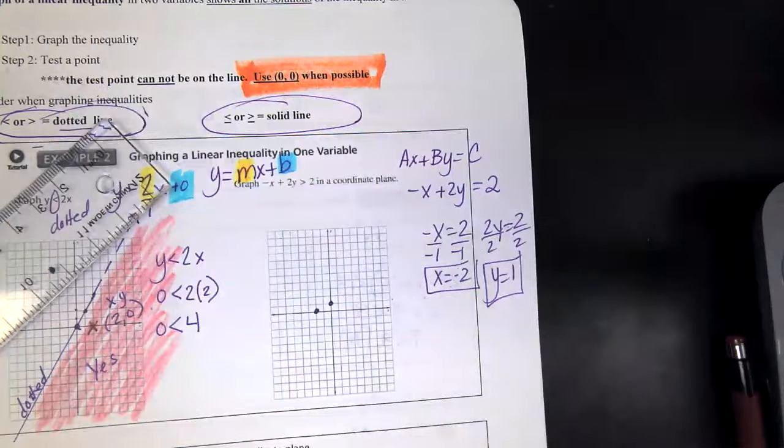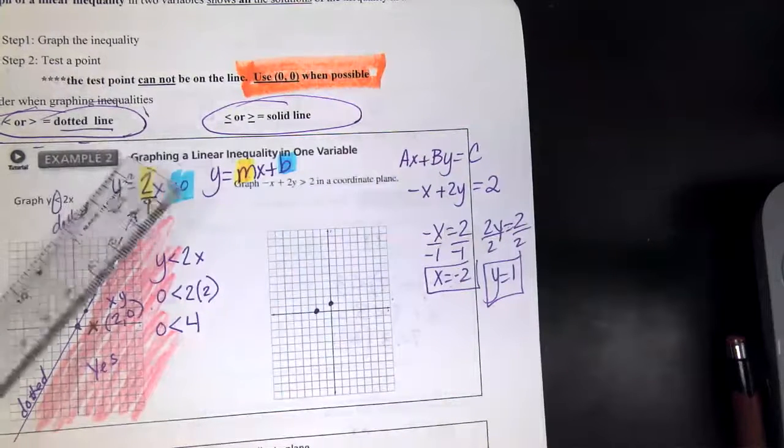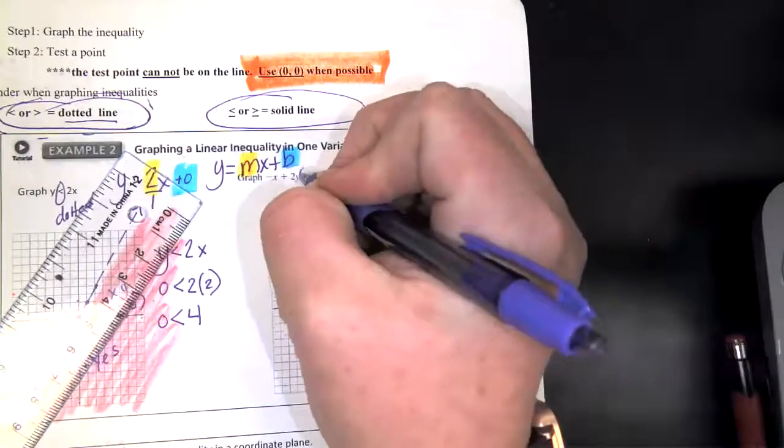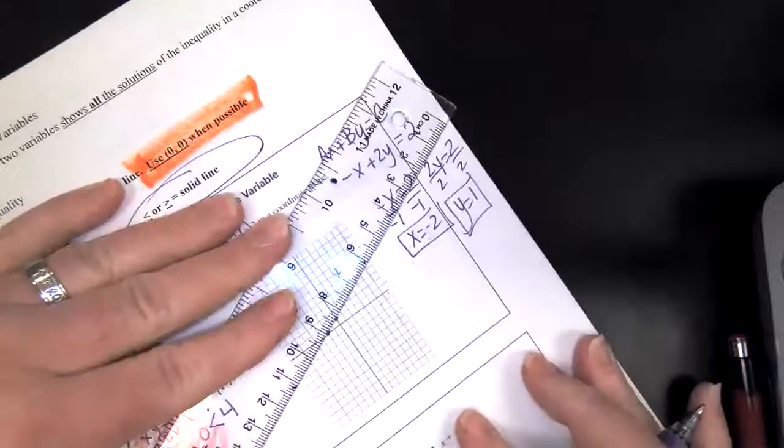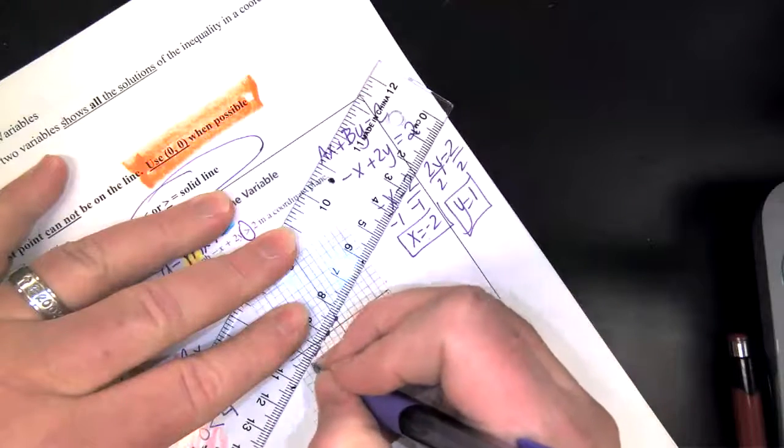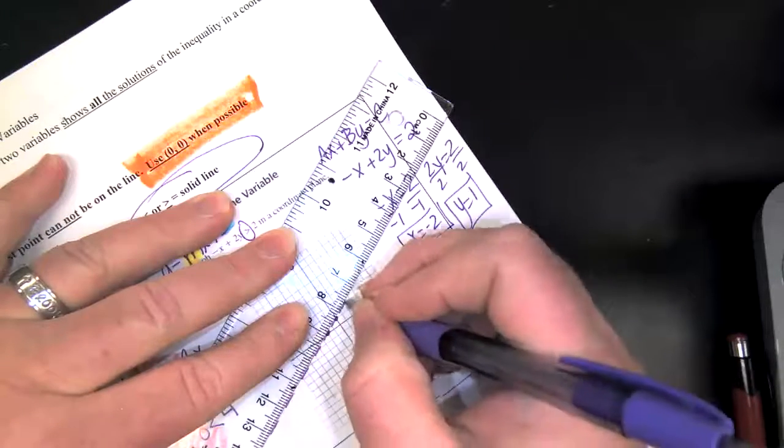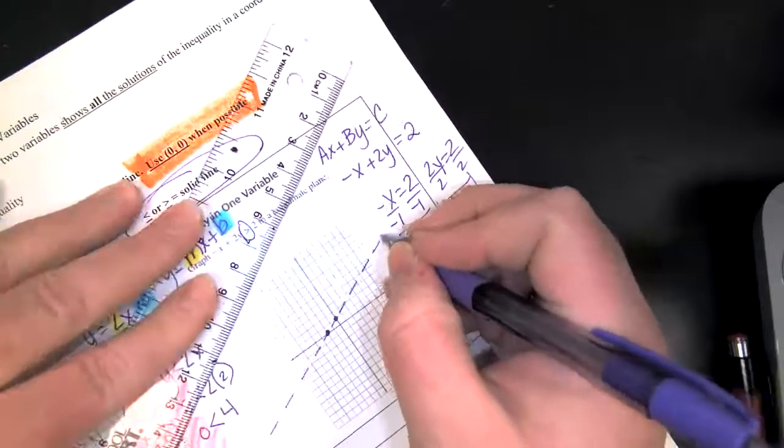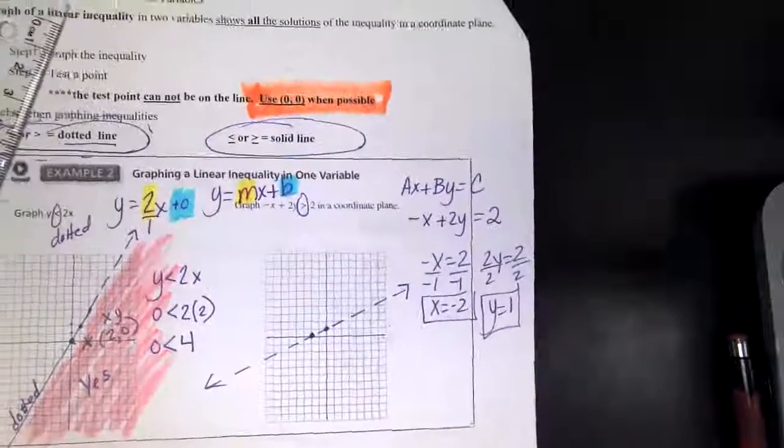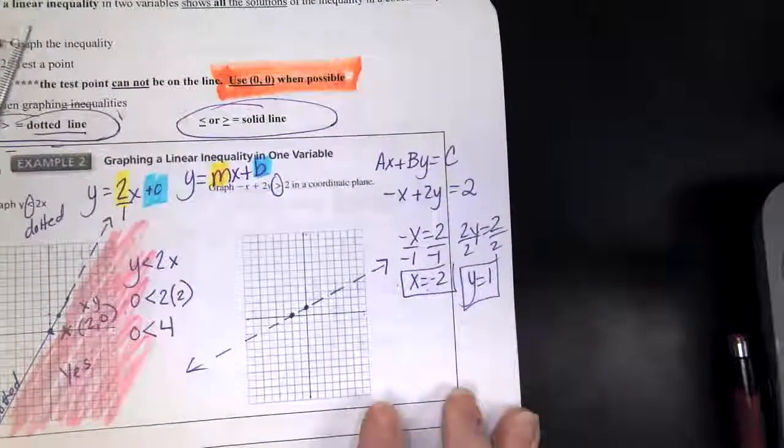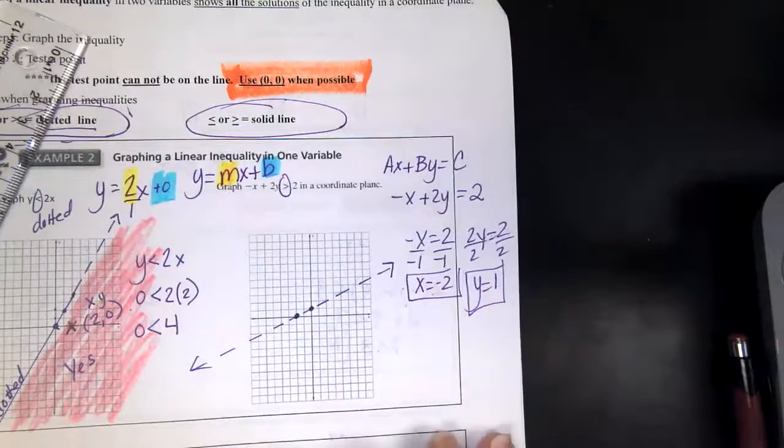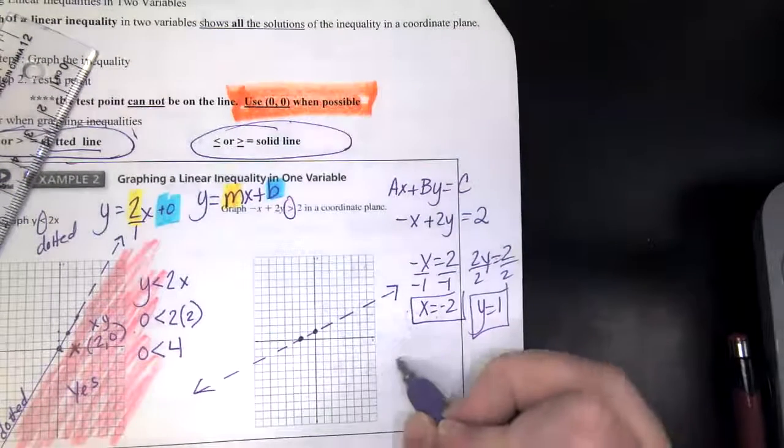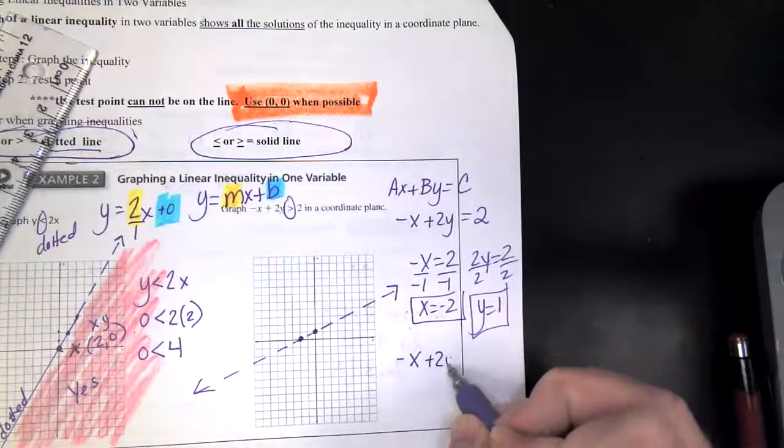If your answer is yes, then you have to shade the side that's yes. Okay. So this means you can pick any point in this area and it will make that statement true. Okay. So there's a lot of things going on. Not only do you have to graph it right, but you also need to make sure you get dotted versus solid.